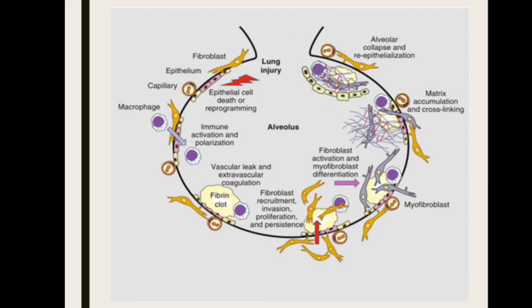All the lung parenchyma is replaced by fibrous tissue, with different areas of the lung at different stages — one part may have active inflammation while another is already completely fibrosed. This inflammation continues even after removal of the inciting agent, making the disease progressive, which is why patients present with progressive dyspnea. If the etiology is unknown, it is termed idiopathic interstitial lung disease.